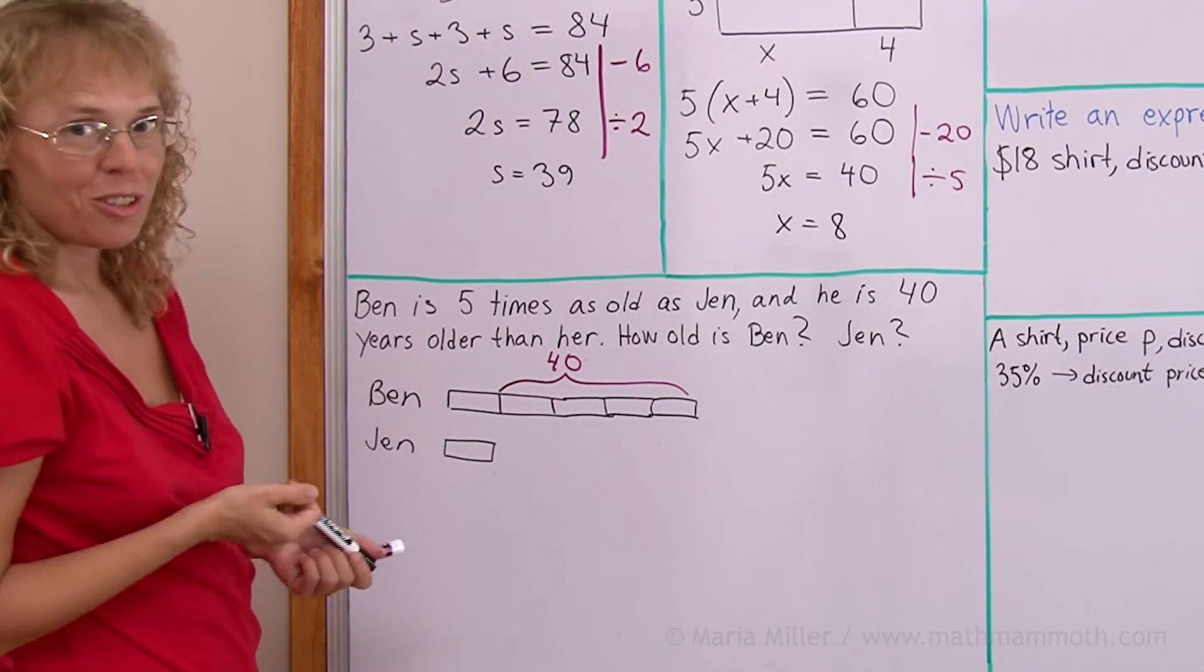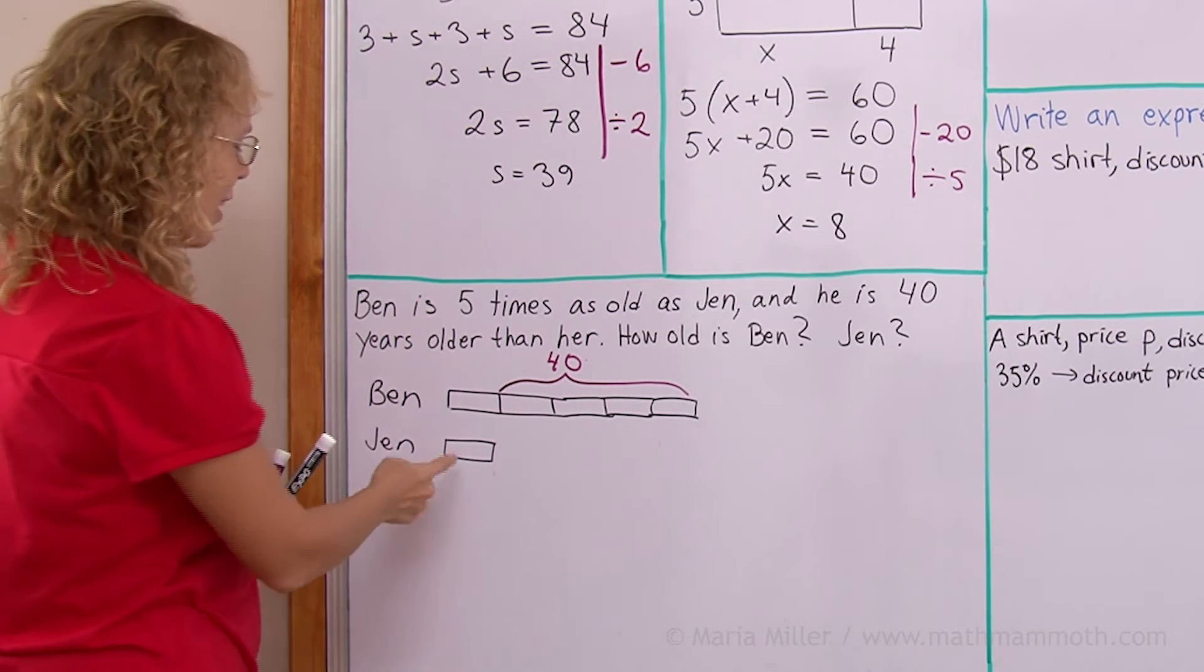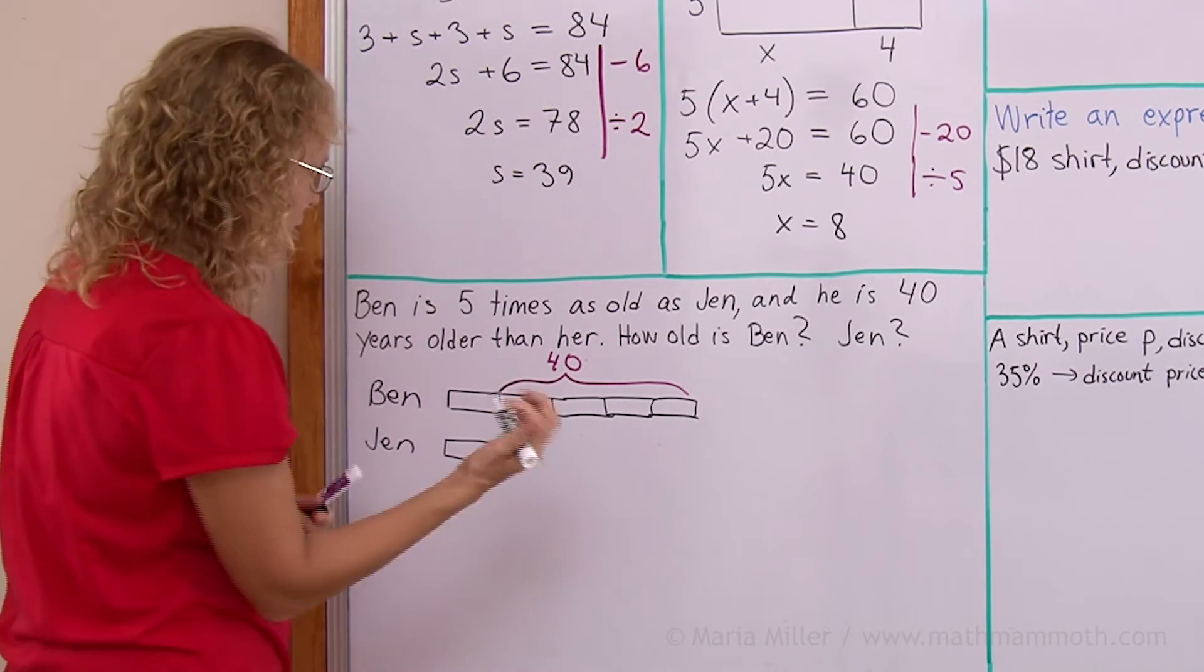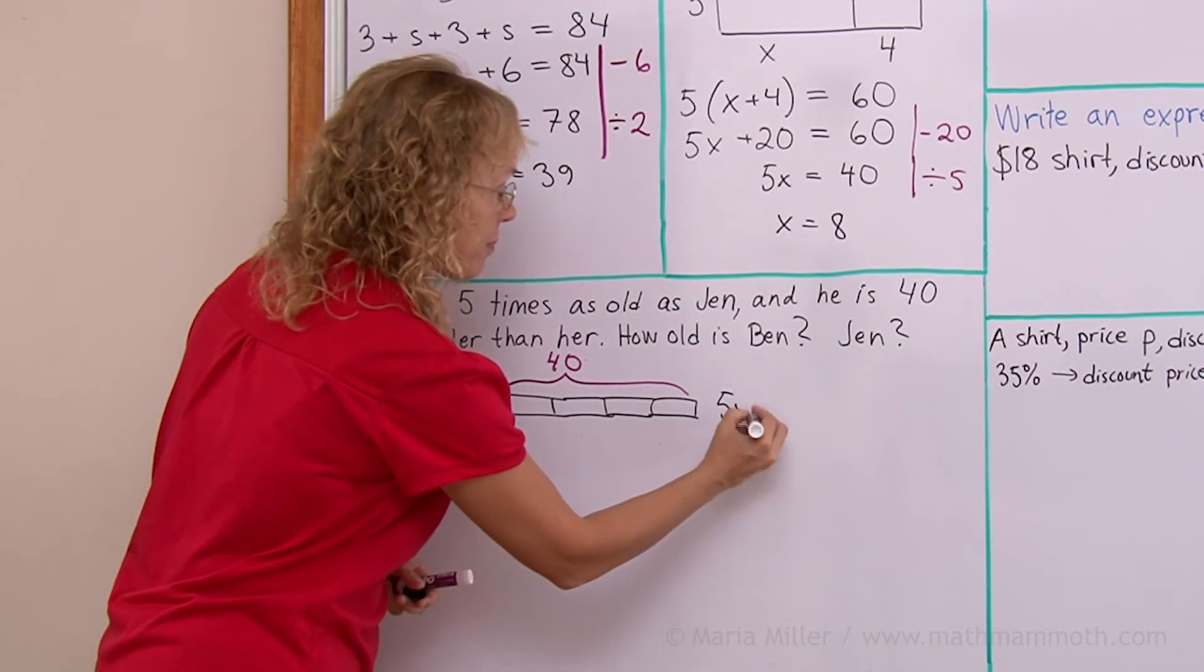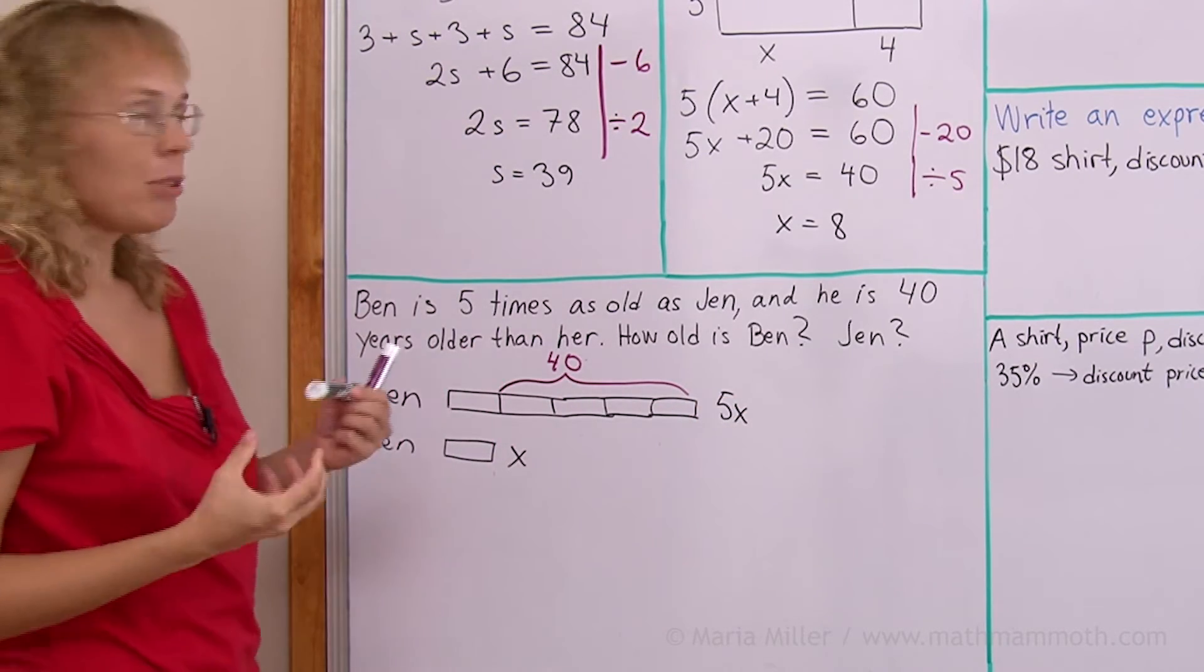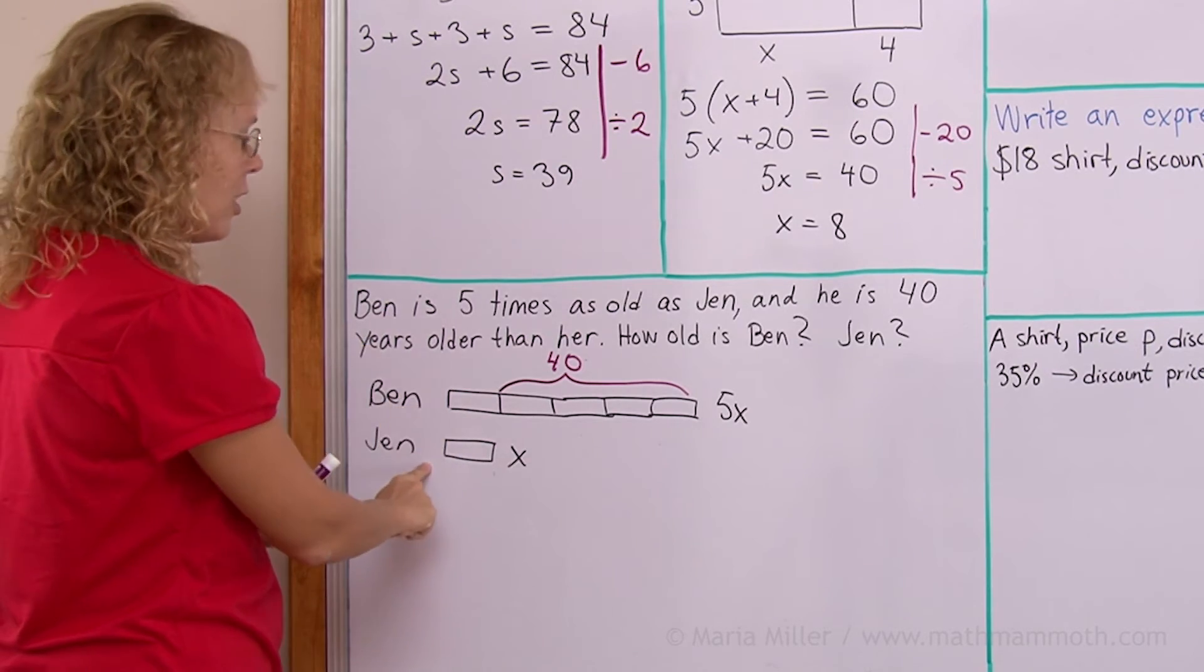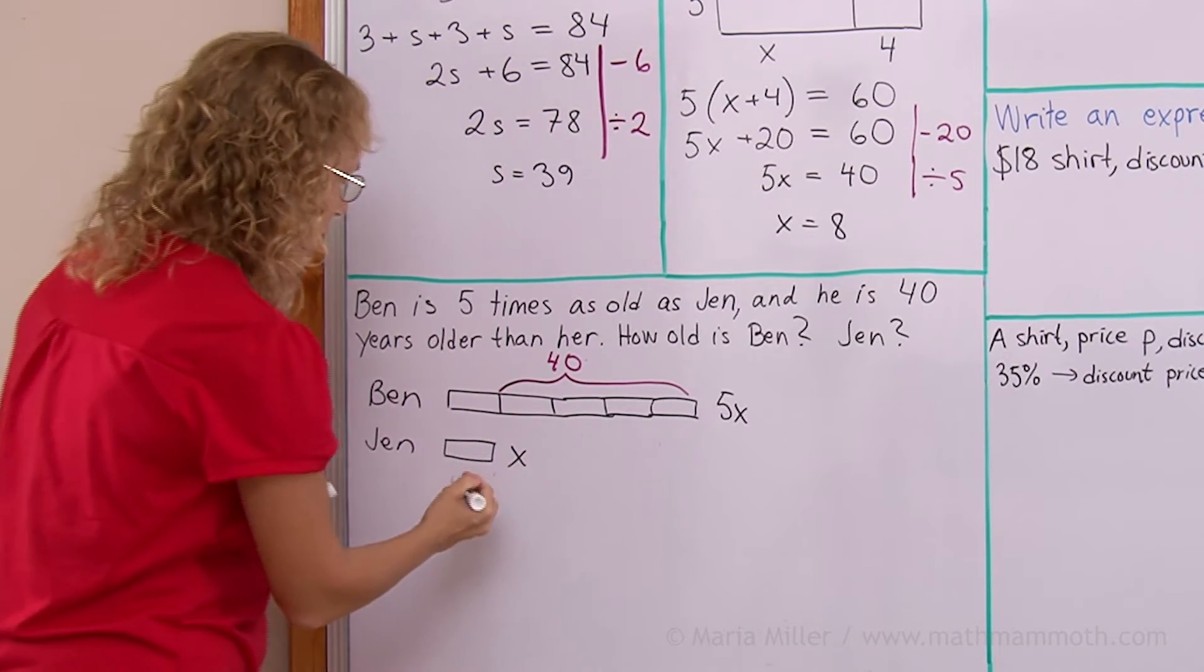Now, let's write an equation, though, also. Now that we have solved it, let's write an equation. This block here is our unknown. It's very handy to use this 1 block as an unknown. So Jen's age is x and Ben's age is 5x. And since we know the difference in the ages, we know how much older he is than her. The difference is, of course, the subtraction. So when I take 5x minus x, the difference 5x minus x, then that we know from the problem it is 40.